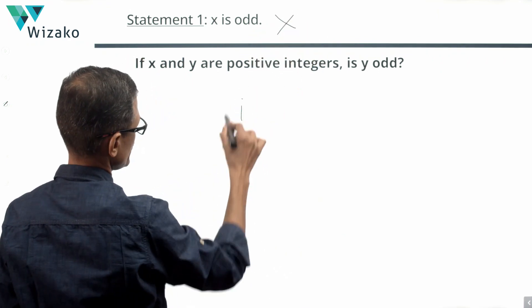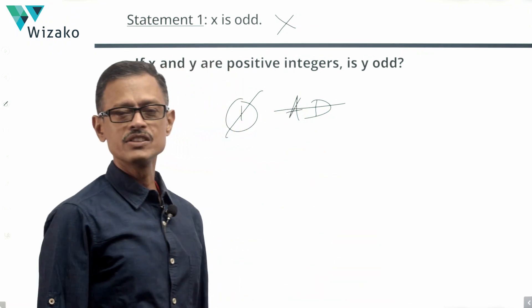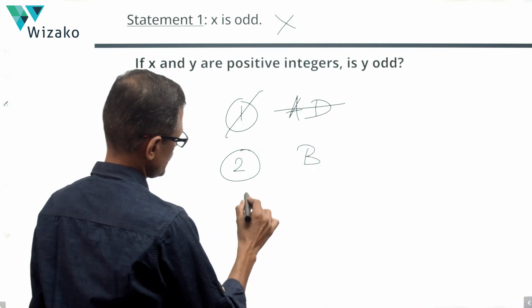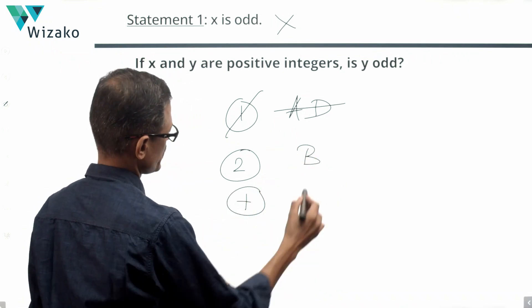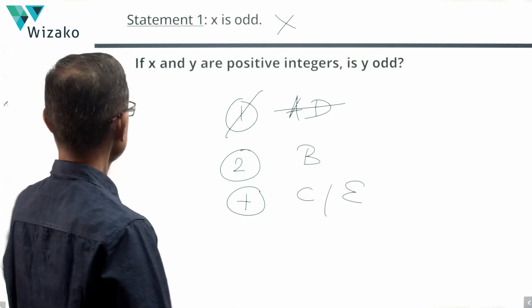Let's rule out the two answer options that go when statement one is sufficient, which are A and D. If statement two alone is sufficient, let's go with B. If that is also not sufficient, let's combine and determine whether the answer is C. Take a look at statement two.